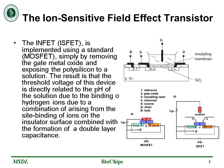So, what are the INFETs? The ion-sensitive field-effect transistor, INFET or sometimes referred to as ISFET, is implemented using a standard MOSFET simply by removing the gate metal oxide and exposing the polysilicon to a solution. The result is that the threshold voltage of this device is directly related to the pH of the solution due to the binding of hydrogen ions, which is due to a combination arising from the site binding of ions on the insulated surface combined with the formation of a double-layer capacitance.